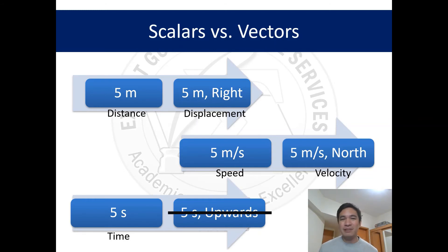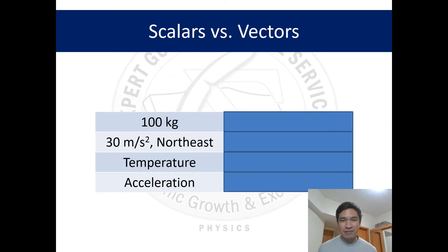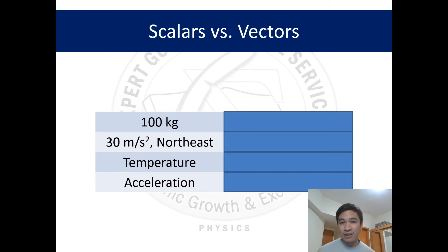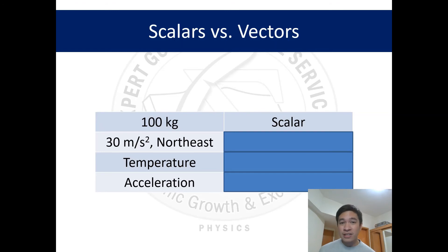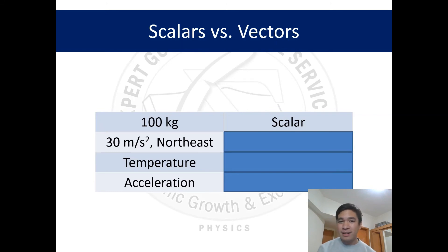Now let's test yourself. You have four quantities — which is a scalar and which is a vector? First: 100 kilograms — is this a scalar or a vector? Yes, it is a scalar quantity. It only contains magnitude, as in '100 kilograms,' so it is a scalar. How about 30 meters per second squared northeast — is it a scalar or a vector?